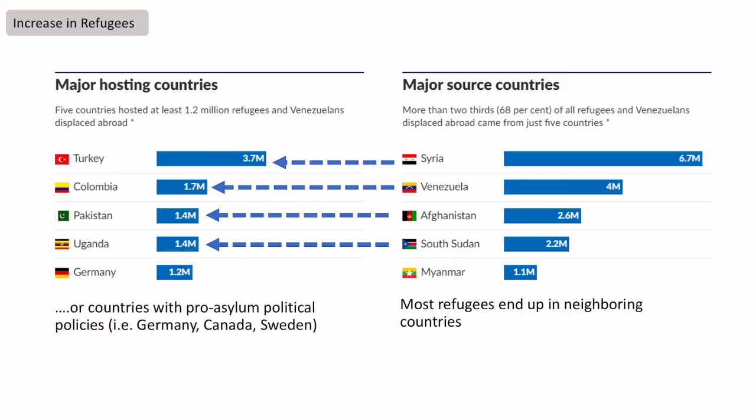The exception to that is countries with more pro-asylum political policies — Germany is a very good example — which are more likely to take in greater numbers of refugees. However, most people leaving their country will normally end up in a developing country rather than a developed one.